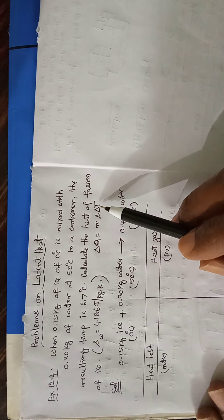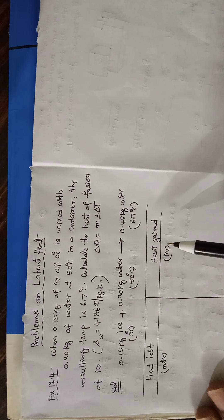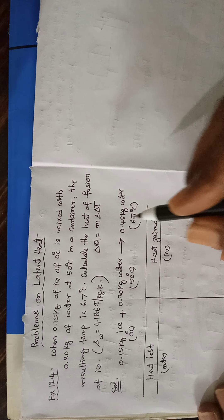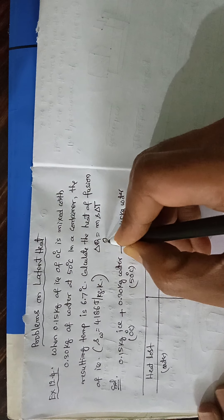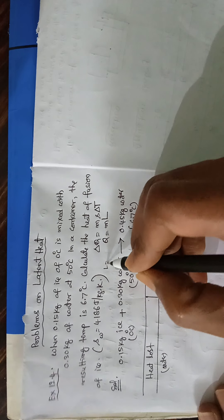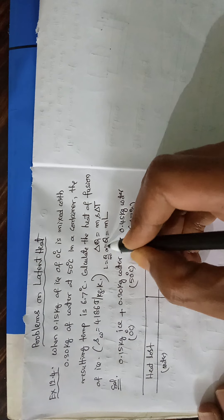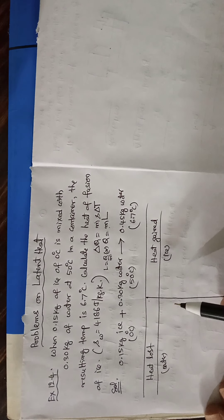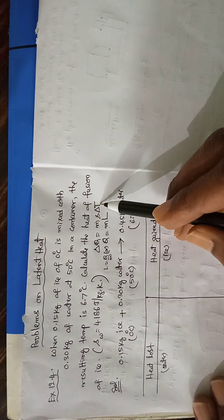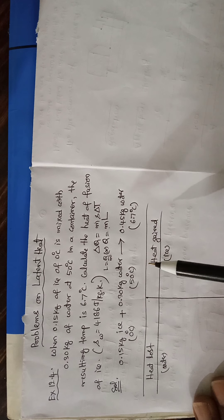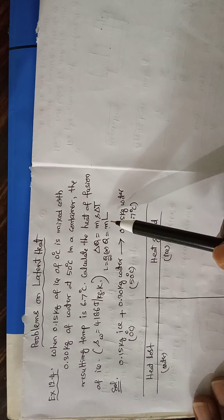ΔQ = MsΔT, where S is the specific heat of the given substance. But here, in addition to this, we need another equation — the equation for latent heat: Q = ML. Latent heat is defined as L = Q/M, or Q = ML. The difference: when there is a change in temperature, we use ΔQ = MsΔT. When heat is supplied without change in temperature, we use Q = ML.